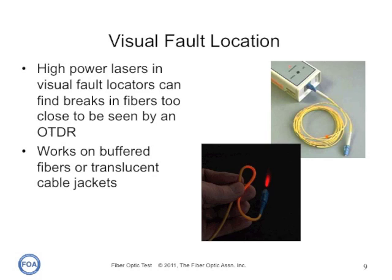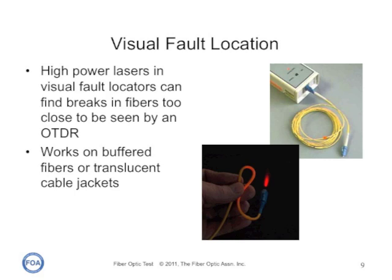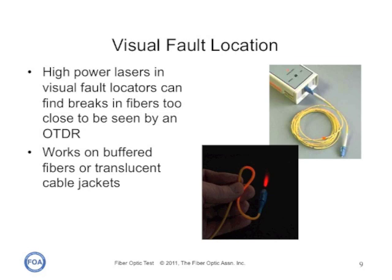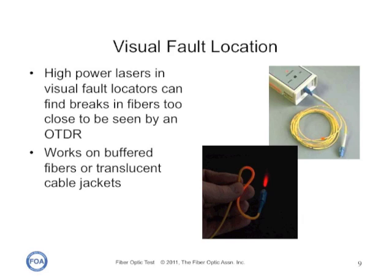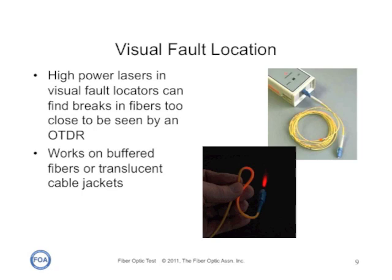Visual fault locators — the high-powered lasers — can do more than just trace fibers. They can actually look at fibers and find areas of high loss that can be caused by installation problems, or they can find breaks in fibers, particularly useful in splice trays where damage to the fibers is almost always impossible to find when it's so close to the splice. You have to remember that visual fault locators only work on buffered fibers or translucent cable jackets, typically from single-mode fibers.